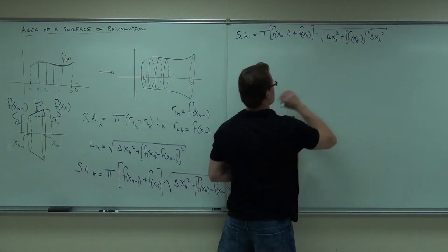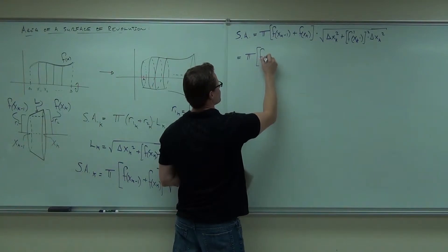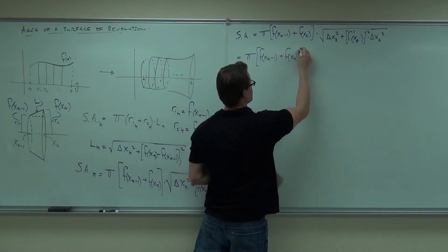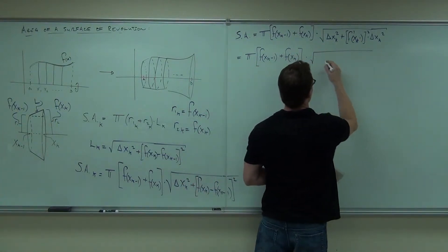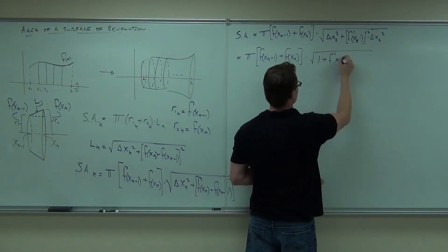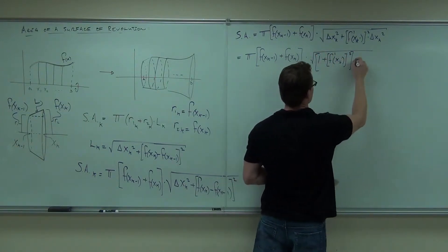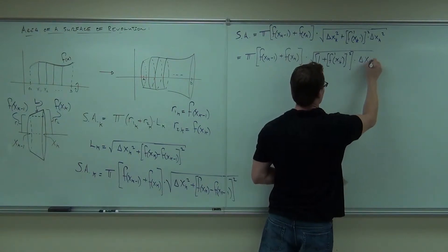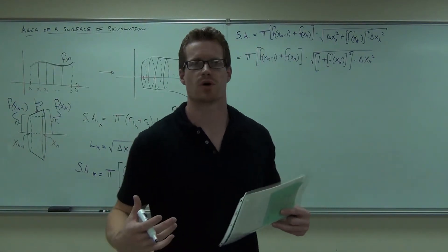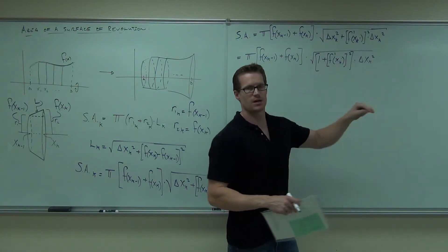So we'll factor out again. Notice that there's a square root of two things that are being multiplied together. We can split up those products. So we'll take the square root of this, leave it. We'll take the square root of this, that would be delta x of k.